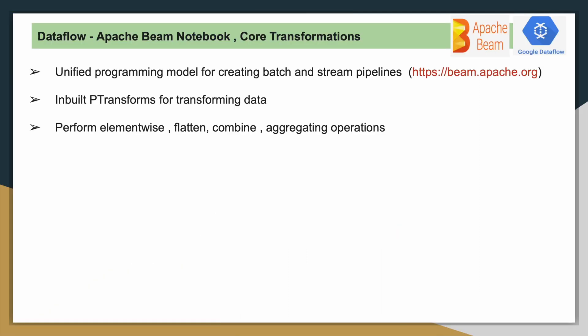As I already discussed in my previous video, we have seen how to create Apache Beam pipelines and also how to create a P collection using different options. We have created P collections by reading in-memory data and also by reading external data sources. Apache Beam is a unified programming model for creating batch and stream pipelines. Please go through this URL which explains each and every concept with examples.